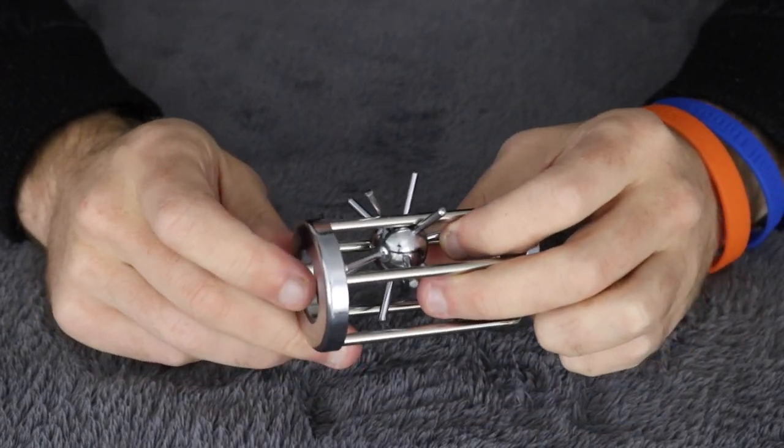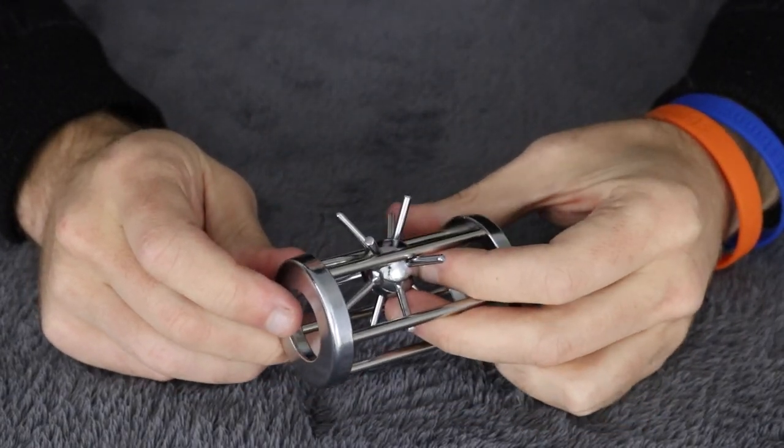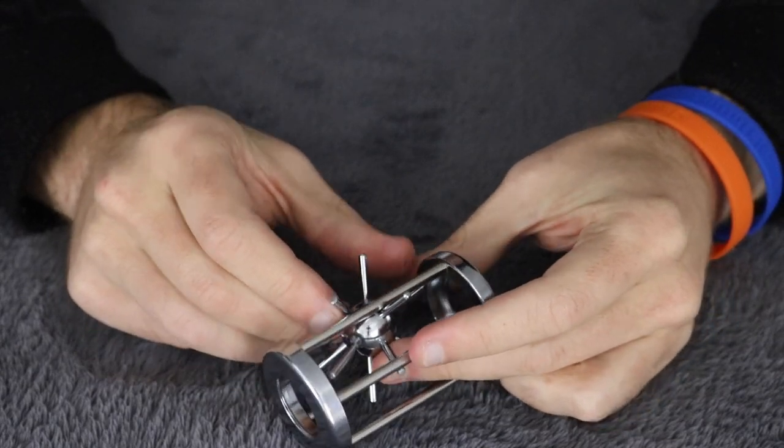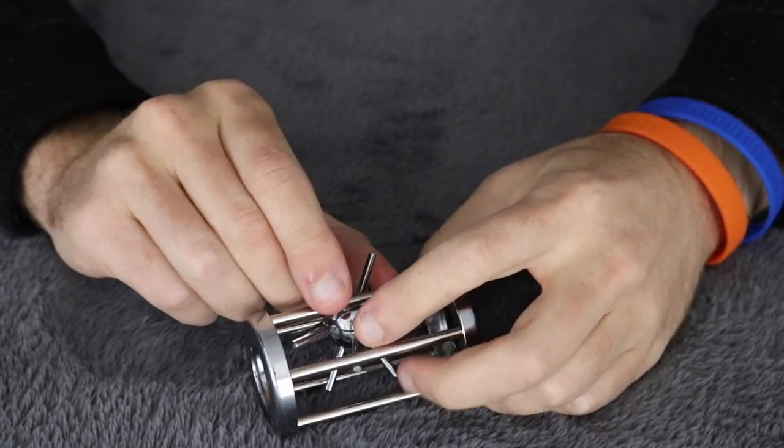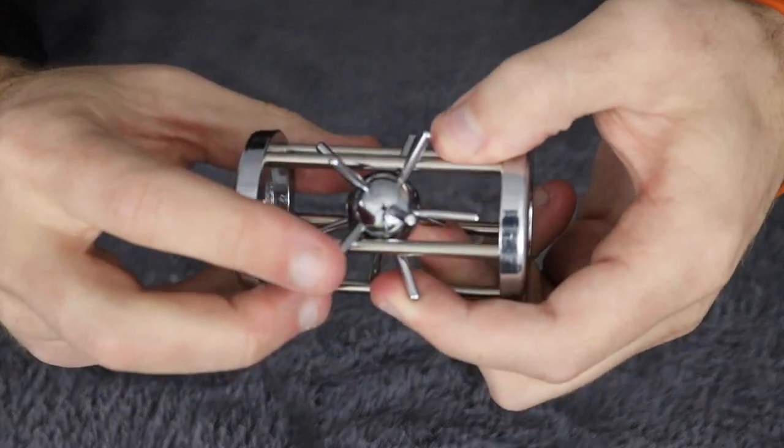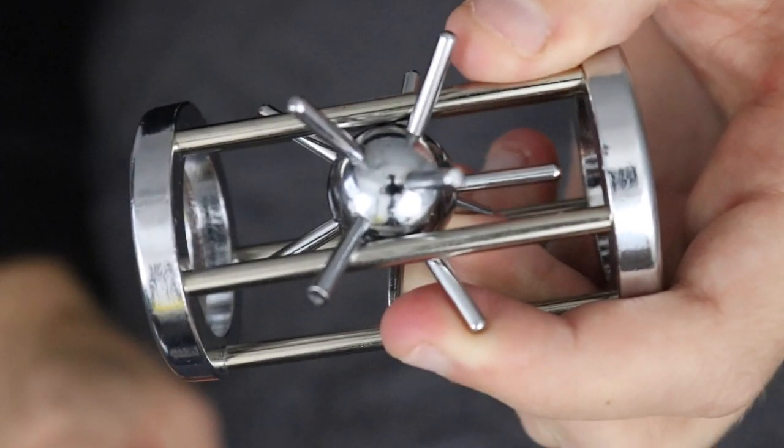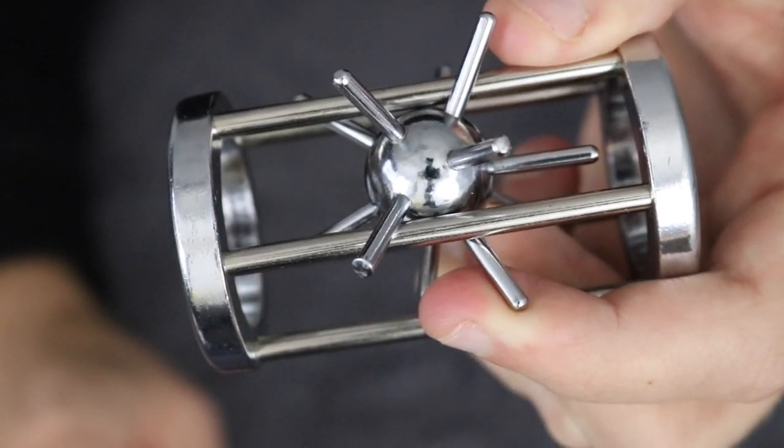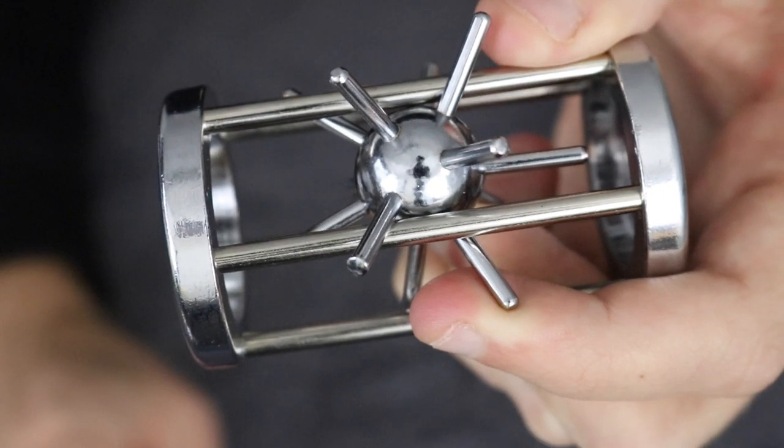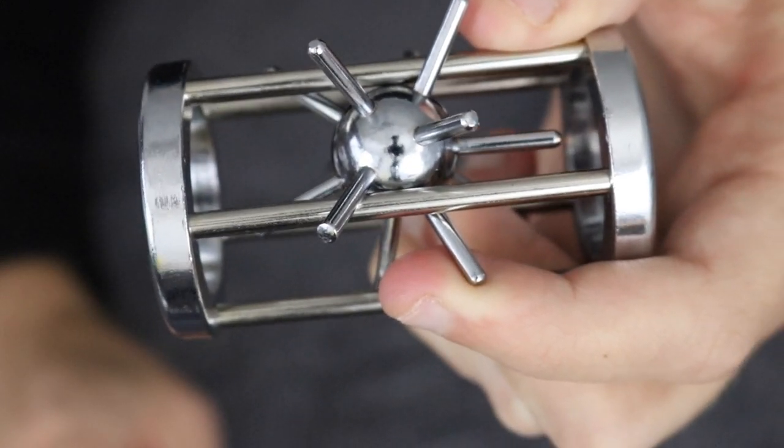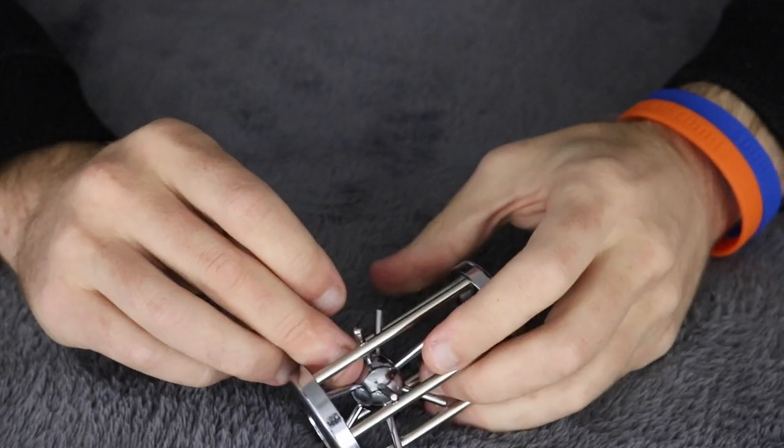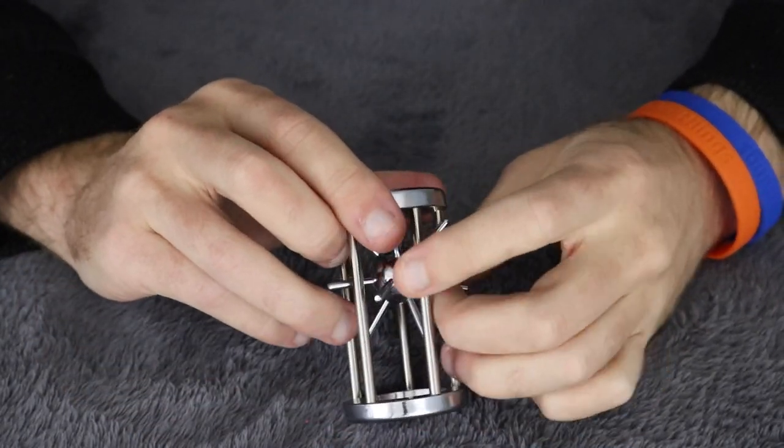Okay, so I've managed to get three of the spikes out pretty quickly, but what I'm noticing is the actual ball itself - there's no physical way that it's going to fit through that part of the puzzle. So it either comes out at a different part or it comes out at these holes at the top.